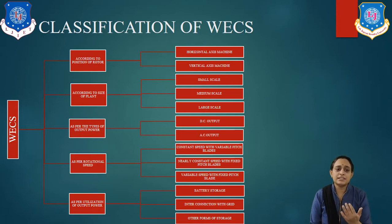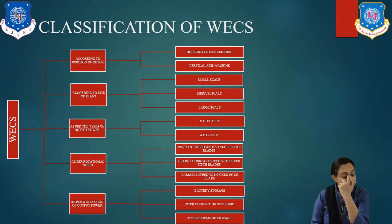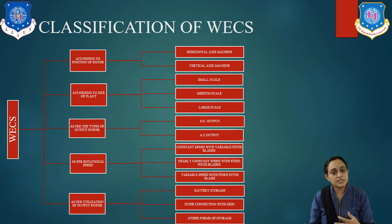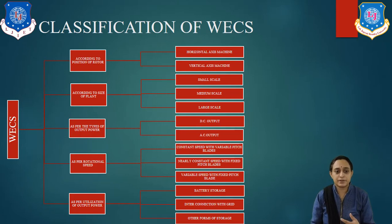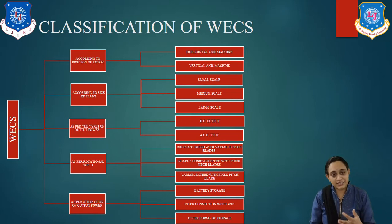Third, as per the types of output power: DC output and AC output. Fourth, as per the rotation speed: constant speed with variable pitch blade, nearly constant speed with fixed pitch blade, and variable speed with fixed pitch blade. Fifth, as per the utilization of output power: battery storage, interconnection with the grid, and other forms of storage.